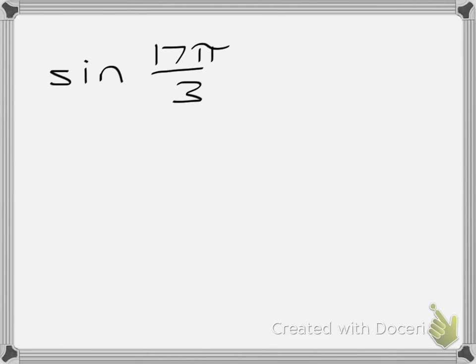The same can be said for the same kind of problem with radians. The difference is, in radians, my one full rotation is 2 pi. I want it in terms of a denominator of 3. So this becomes 6 pi over 3, because 6 pi over 3 is equivalent to 2 pi.